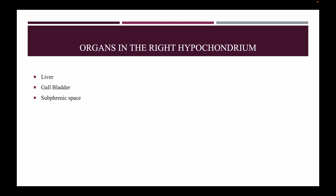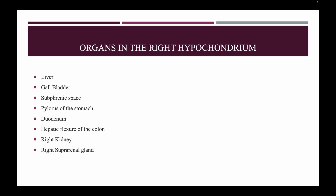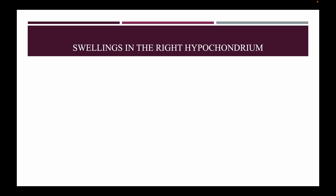Organs in the right hypochondrium: liver, gallbladder, subphrenic space, pylorus of the stomach, duodenum, hepatic flexure of the colon, right kidney, and right suprarenal gland.